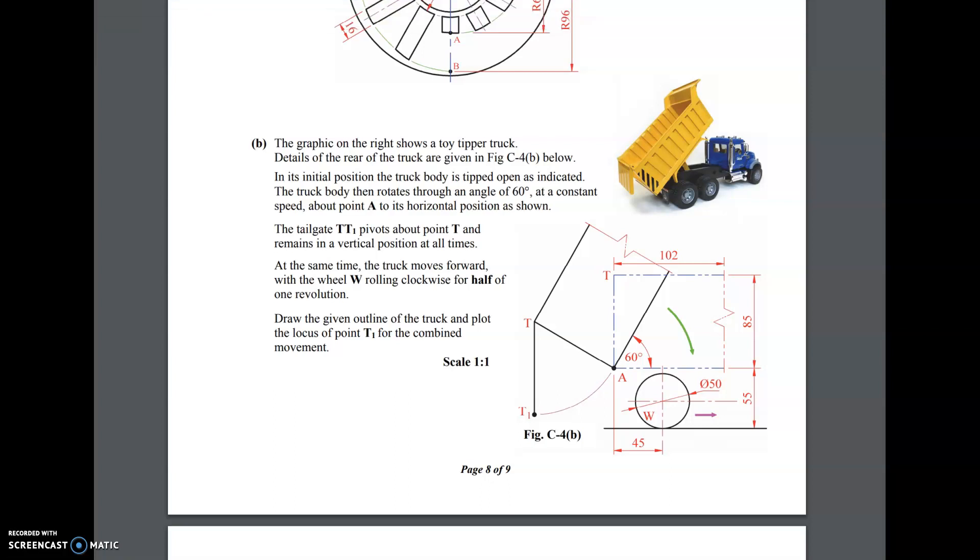So there is a part of the dynamic mechanisms in part B which is the tipper truck. The graphic on the right shows a toy tipper truck. Details of the rear of the truck are given in figure C4 below. In its initial position the truck body is tipped open as indicated. The truck body then rotates through an angle of 60 degrees at a constant speed about point A to the horizontal position shown.